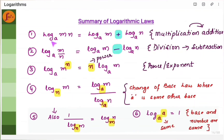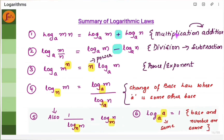The first law is log of mn — that is, if you have multiplication, then you will have to write it as log of m plus log of n. Here you have m into n, it is going to become log m plus log n. If there is multiplication, it will become addition.